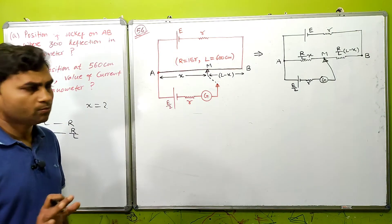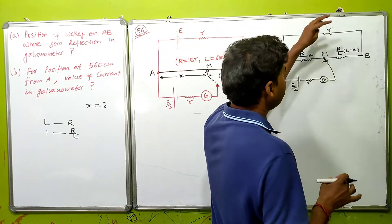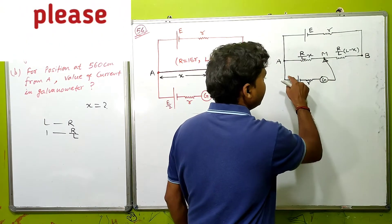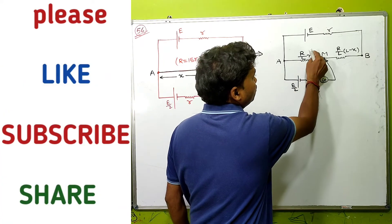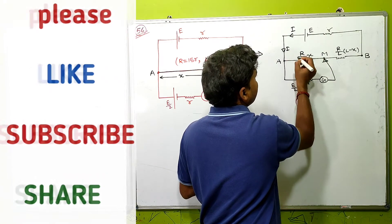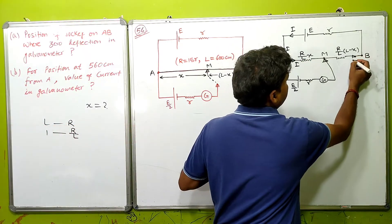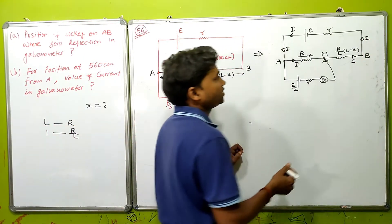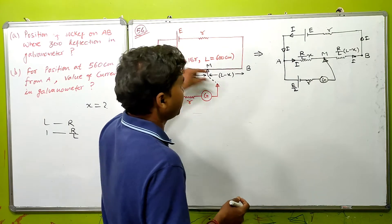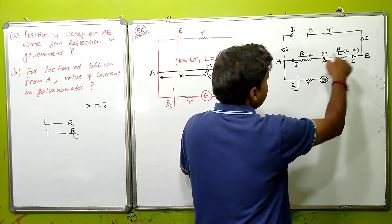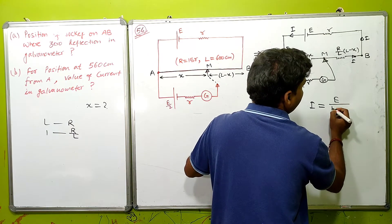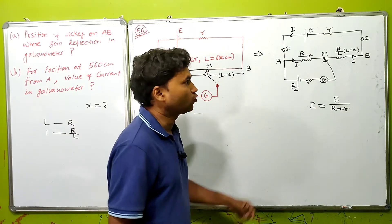Now this is a simple circuit. Since no current flows through the galvanometer branch, we consider only the main loop. The total resistance is R, which is 15R plus R (the wire resistance plus internal resistance). So the current I equals E divided by (R plus R), applying simple Ohm's law. The two resistances in series give R plus R, so I equals E divided by (15R plus R).